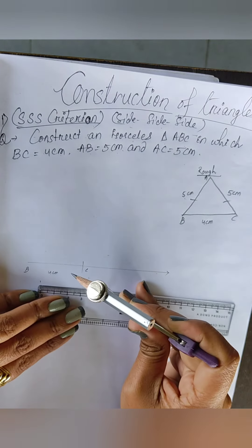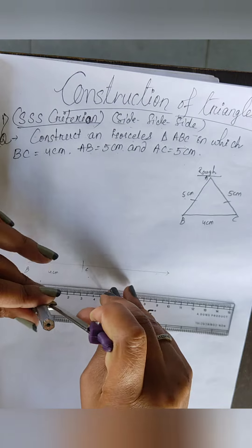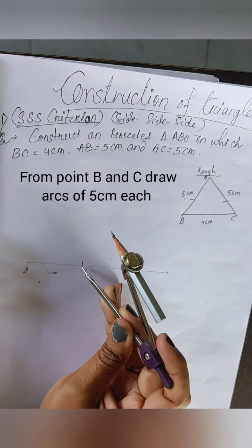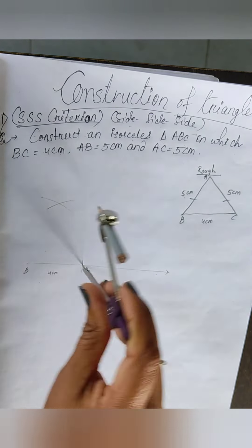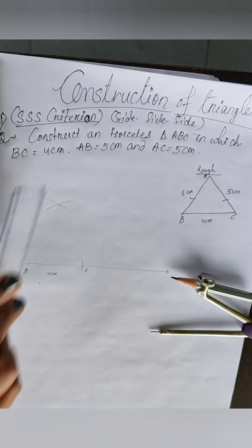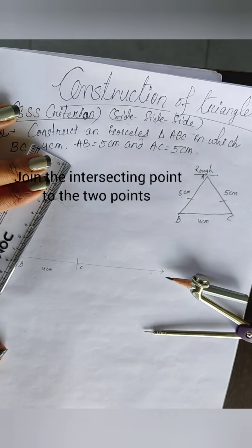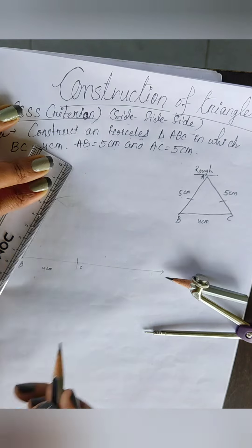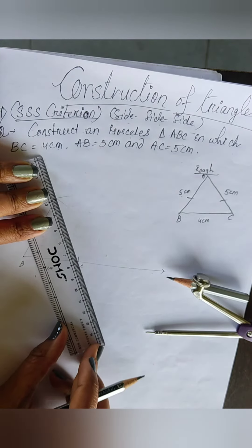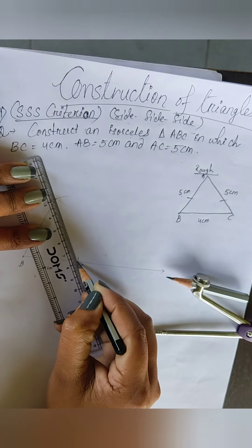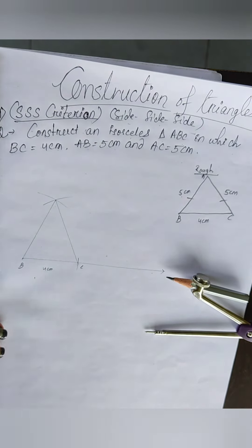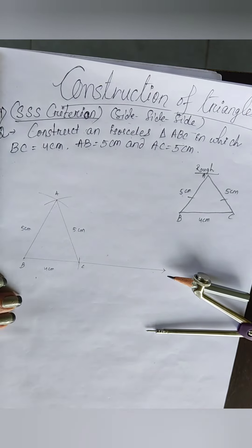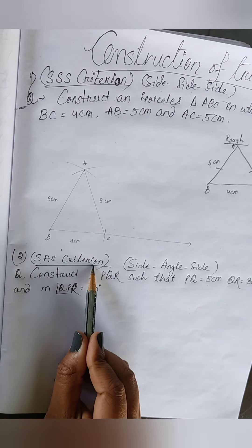For AB and AC, the measurement is 5 centimeters. Take the measurement of 5 centimeters and draw arcs from both B and C. AC is also 5 centimeters, so you can take another measurement if required. Now join the intersecting point with point B and then the intersecting point with point C. Name it and here it is done.